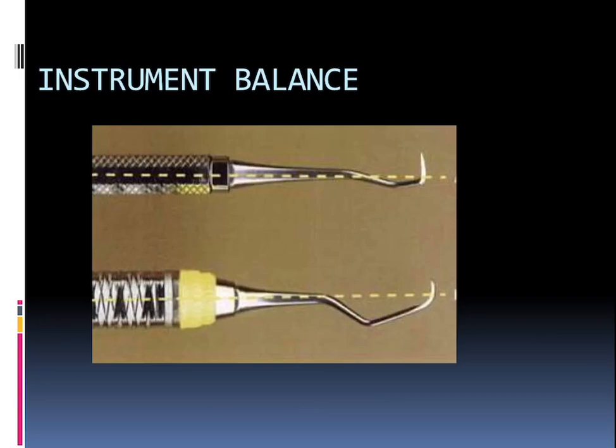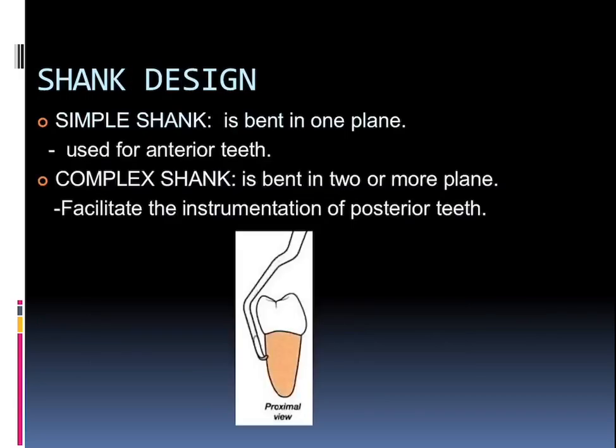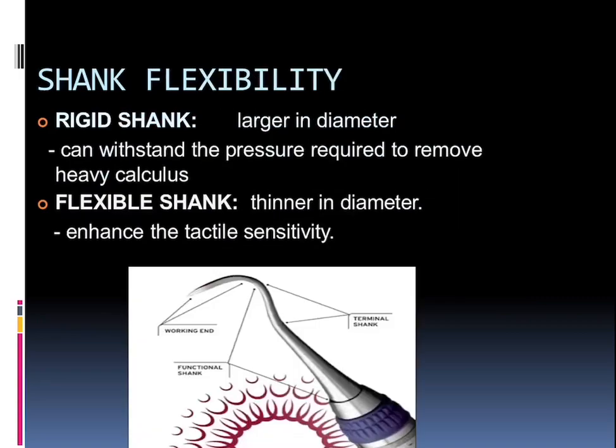Talking about shank design: there is the simple shank and the complex shank. The simple shank is bent in only one plane and is used for anterior teeth. The complex shank, used for posterior teeth, is bent in two or more planes. The flexibility of the shank can be classified as rigid — which is larger in diameter and can withstand pressure required to remove heavy calculus — whereas a flexible shank is thinner in diameter and enhances tactile sensitivity.